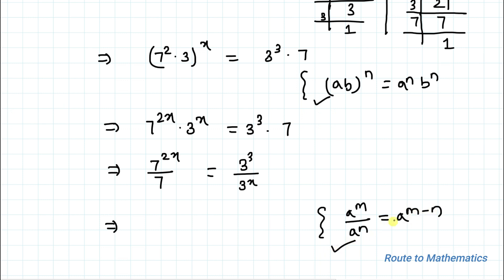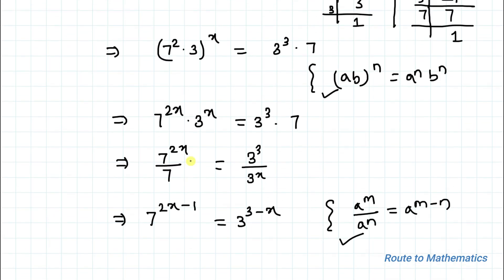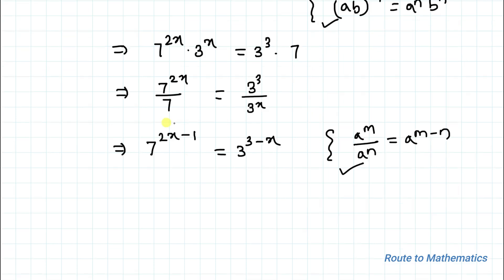By applying this law we can write 7 to the power 2x minus 1 equals 3 to the power 3 minus x. As in the question it is given that 7 to the power 1 minus 2x divided by x minus 3, so let's just convert this term.